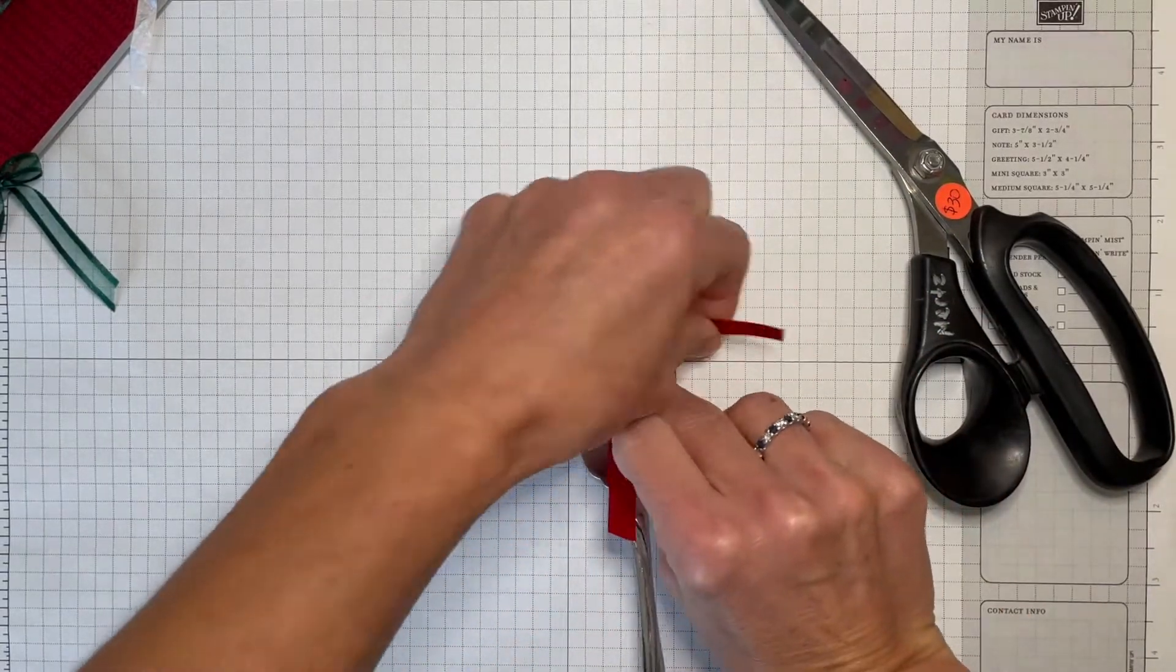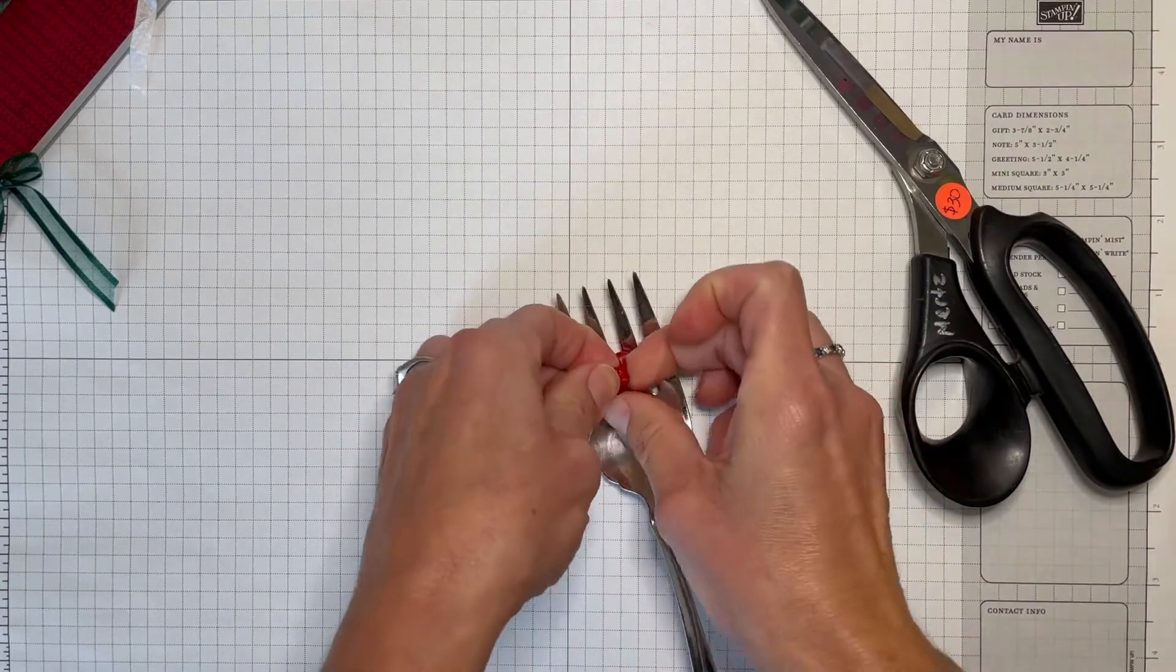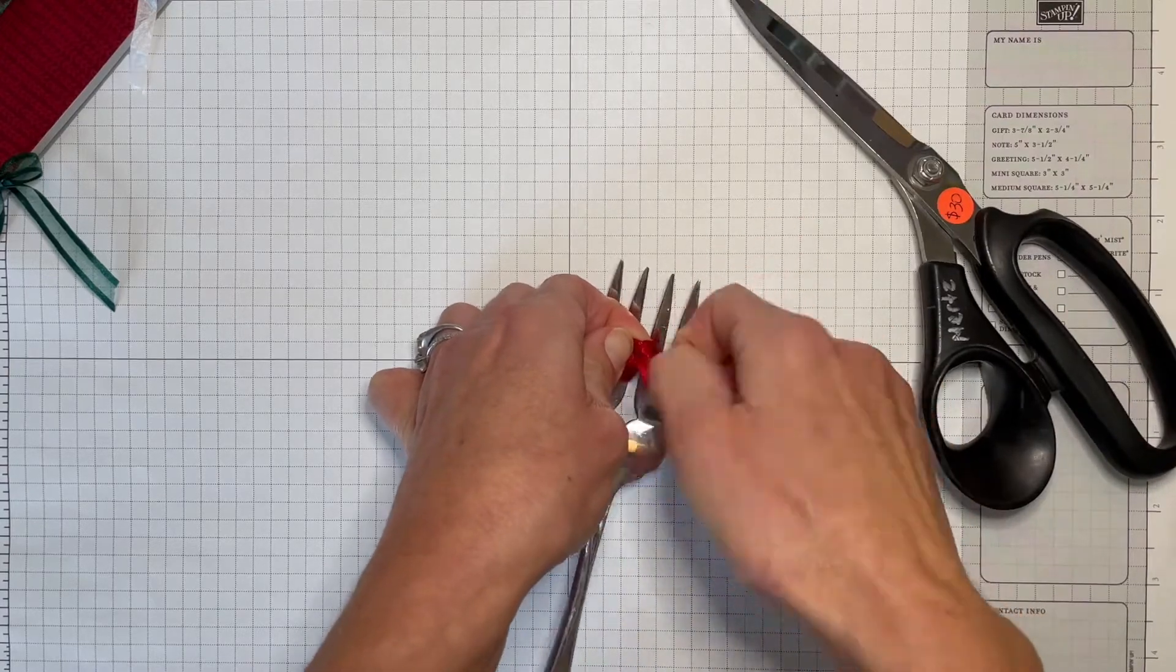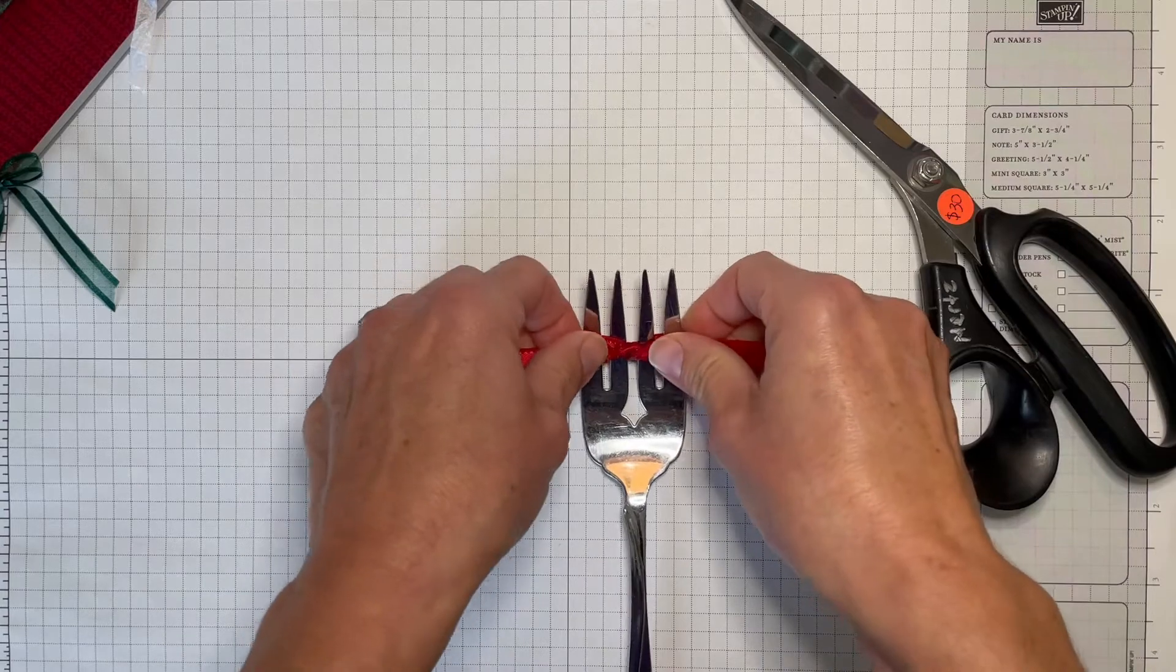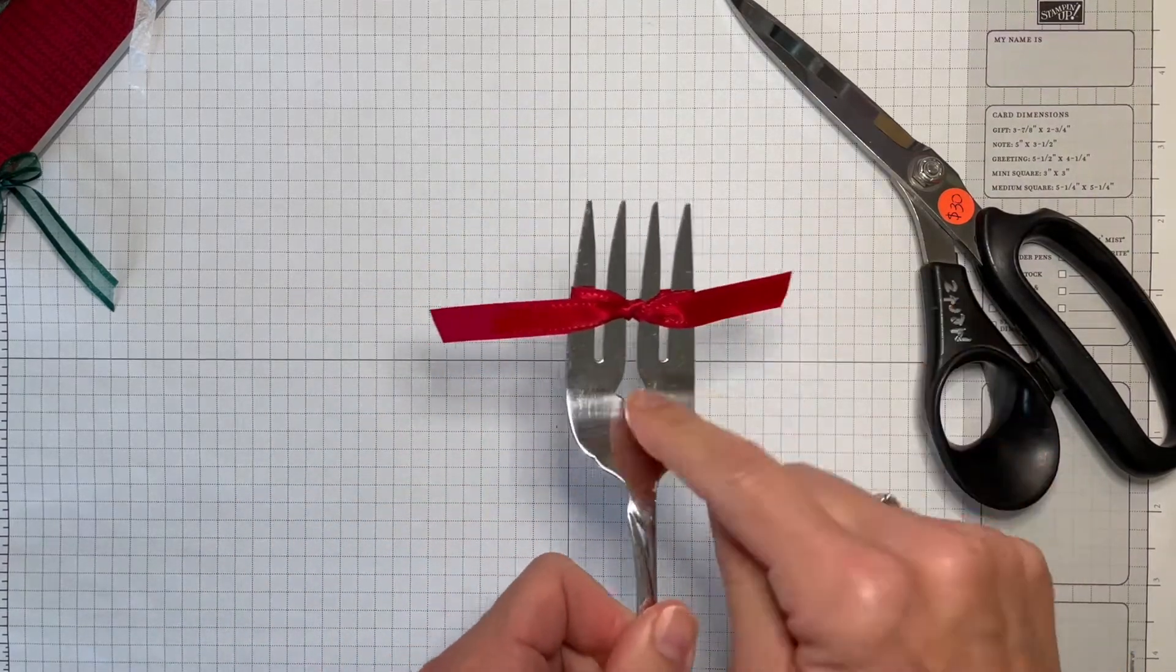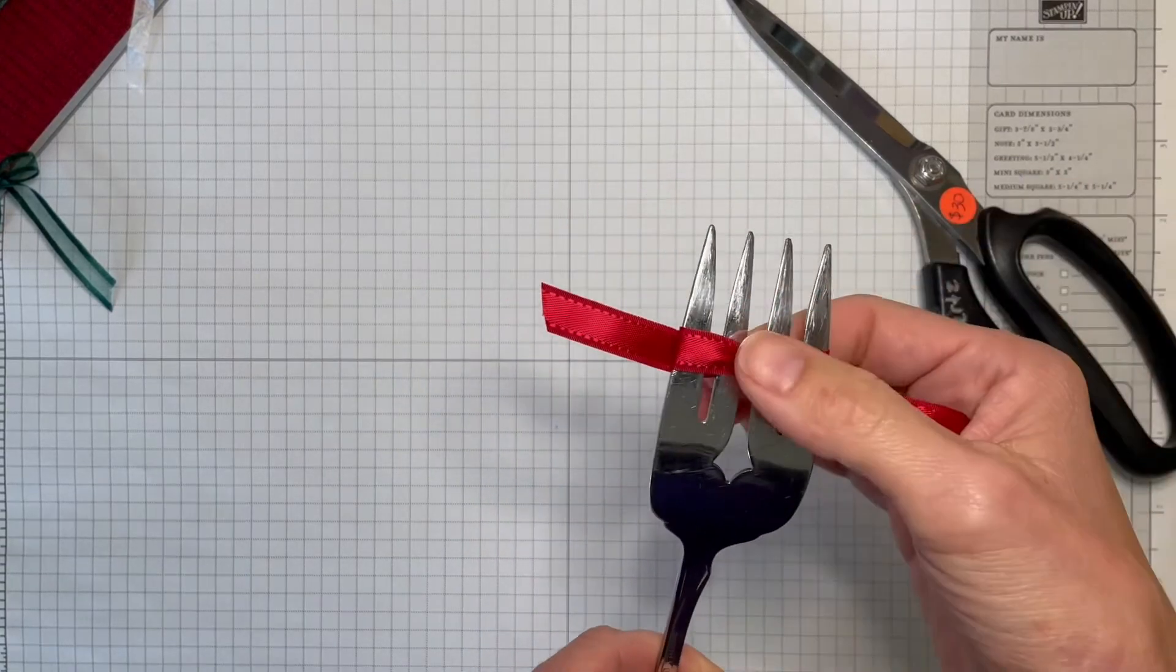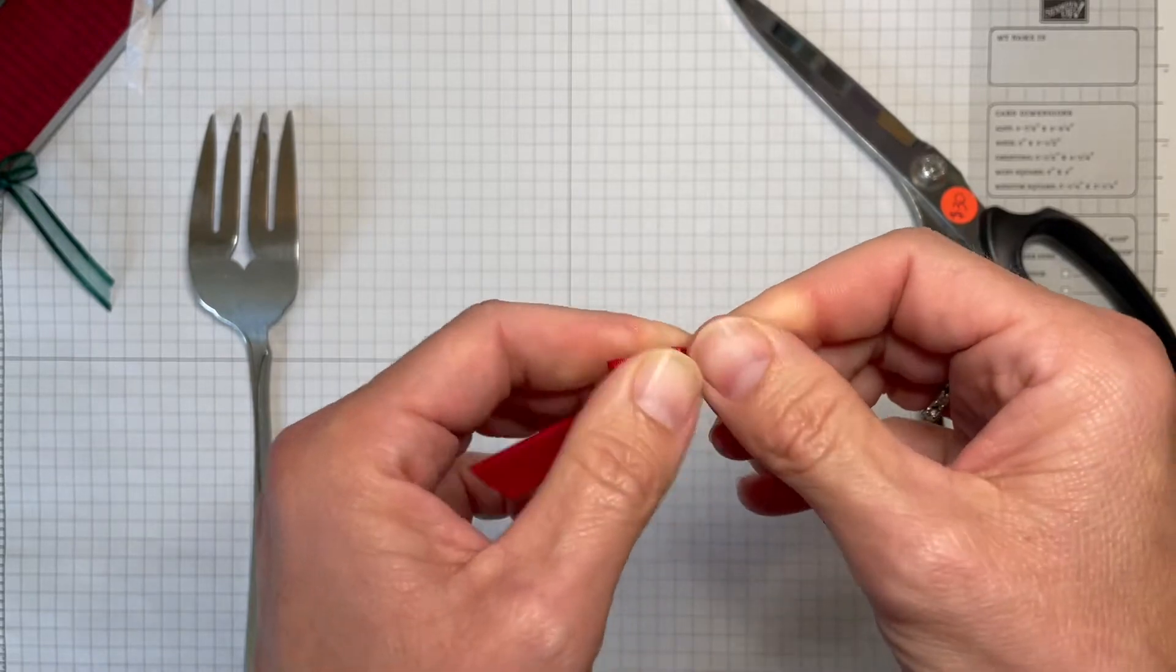And then just tie a knot with the two tails. Easy peasy! If you've got a big salad fork, salad serving fork, or one of those forks they used to hang on the wall as a decoration, as long as it's got that center bit that you can pull the ribbon through, you can make all sizes of forks. Bigger fork, bigger bow. Smaller fork, smaller bow.